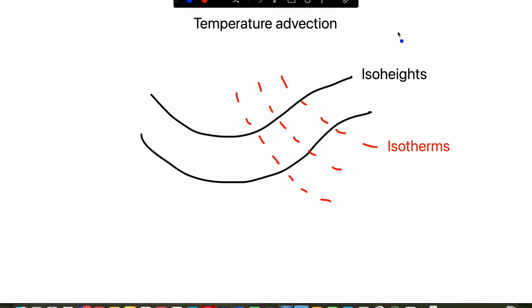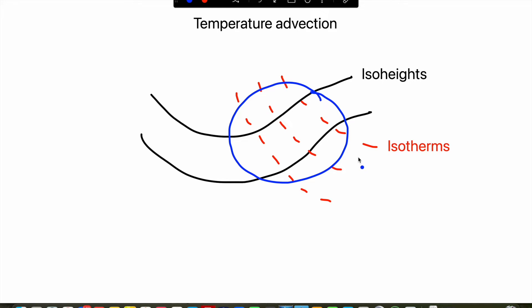Related to the low level jet, we can also use the 850 millibar map to look for areas of low level temperature advection. Advection refers to the transport of a quantity from one region into another, so temperature advection is the transport of warm or cold air from one region to another. We can identify areas of temperature advection by looking for areas where the isotherms cross the geopotential height contours at any angle, with the greatest advection occurring where the isotherms are perpendicular to the height contours.